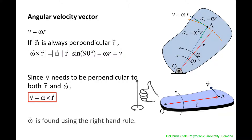The direction of omega can be found by using the right-hand rule. Stick out your right hand in the direction of the position vector and curl your fingers in the direction of the velocity vector. Stick out your thumb. That is the direction of the angular velocity vector.